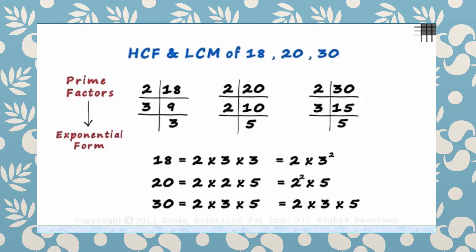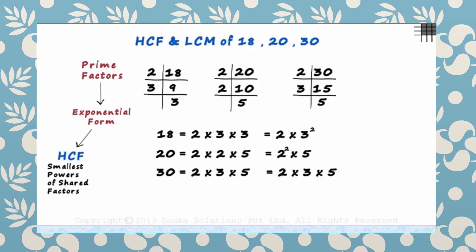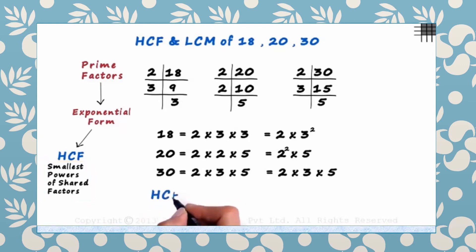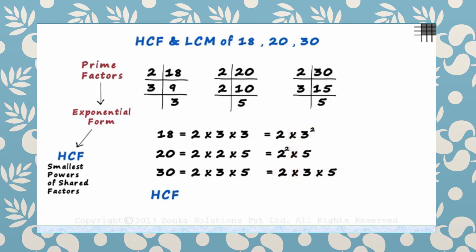Now that we have written all three numbers in exponential form, we can move on to find the HCF and LCM. To find the HCF, we multiply the smallest powers of shared factors. Shared factors are prime factors present in all the numbers. The factors to consider are 2, 3, and 5 — and 2 is the only factor present in all three. The powers of 2 are 2¹, 2², and 2¹. The smallest is 2¹, so our HCF is 2.